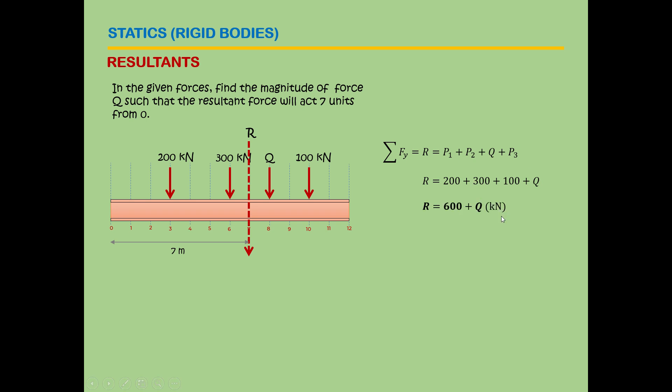So substitute it, and then by Varignon's theorem we will say that this would be our x, or the distance. Rd is equal to P1d1, so this will depend on what you identify. You can identify which are P1, P2, P3, and P4.